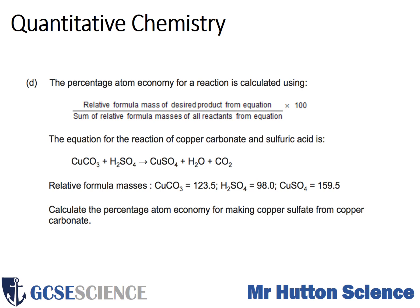The formula requires the relative formula mass of the desired product from the equation. You've got to work out what the desired product is from those three products. Then you need to put that over the sum of the relative formula masses of all the reactants from the equation - everything on the left. Multiplied by 100, that gives you your atom economy. Pause the video now and attempt the question.